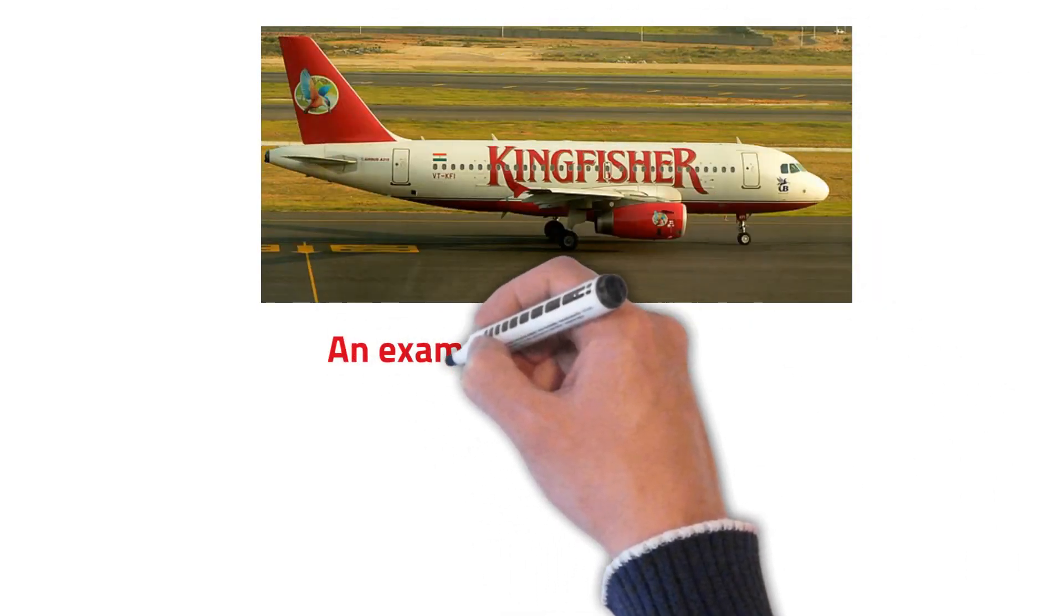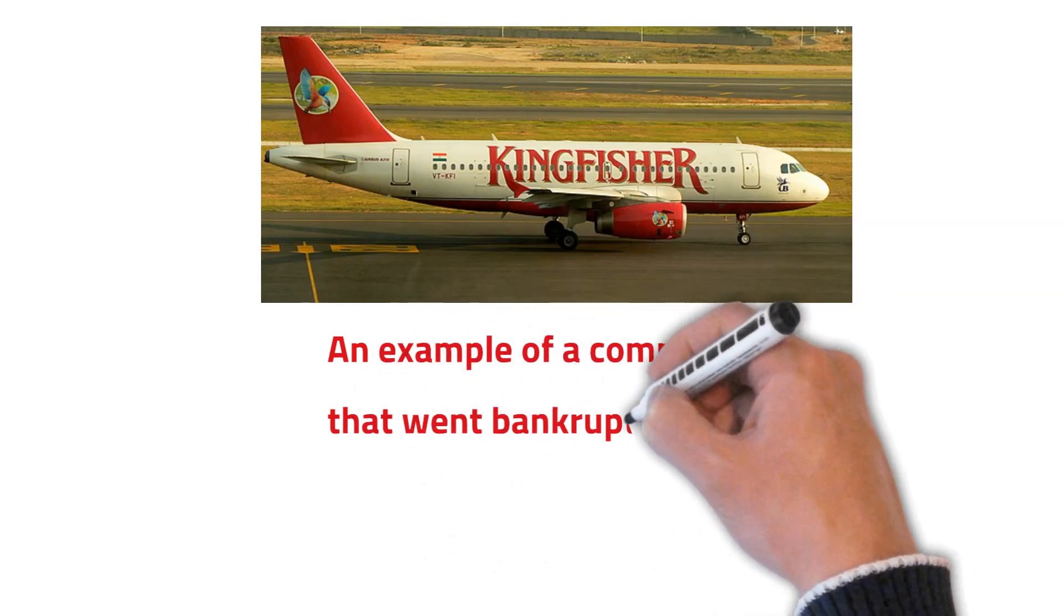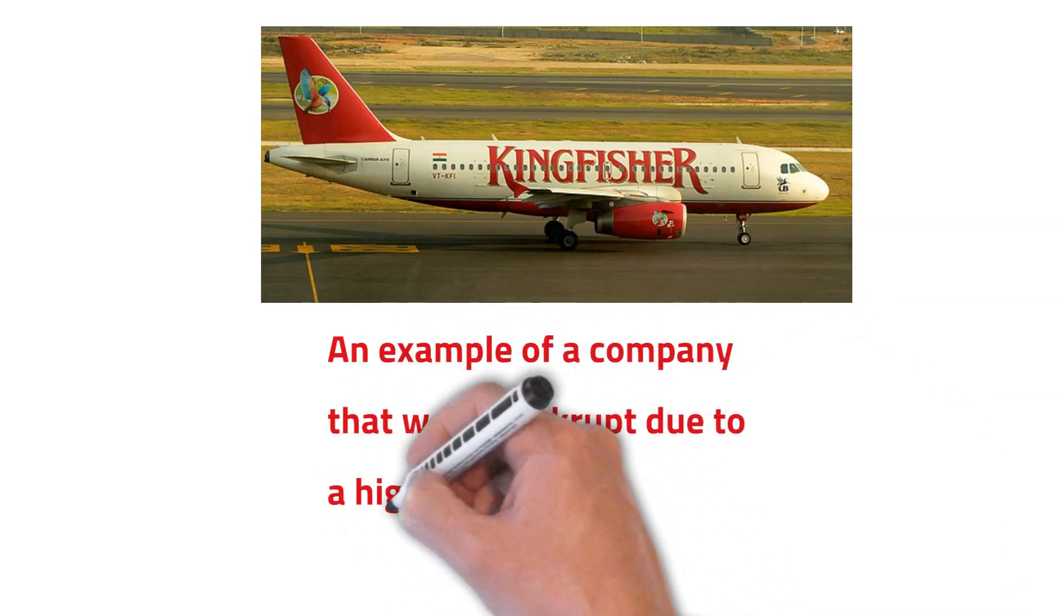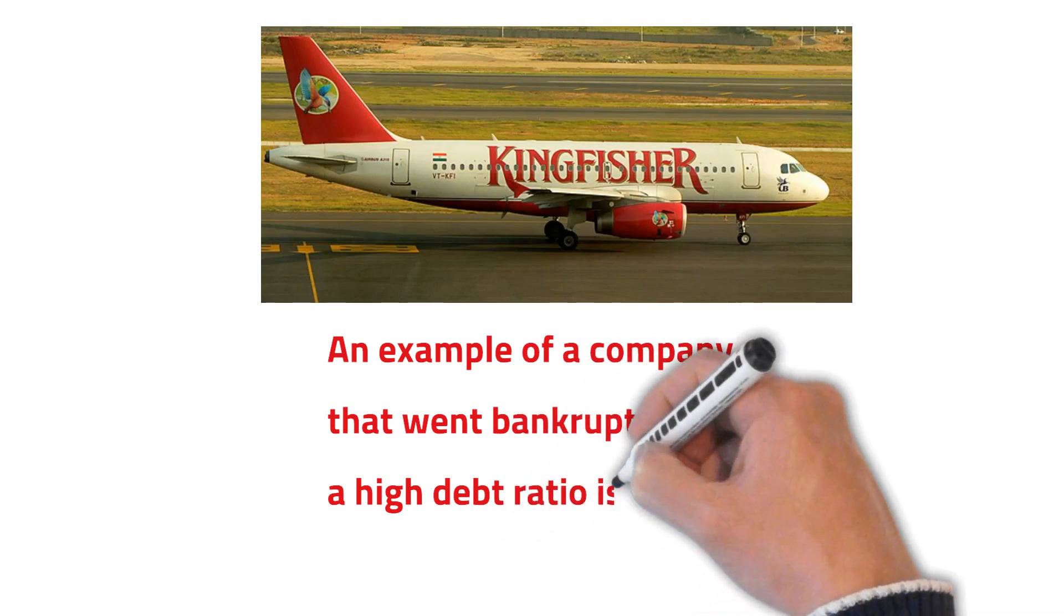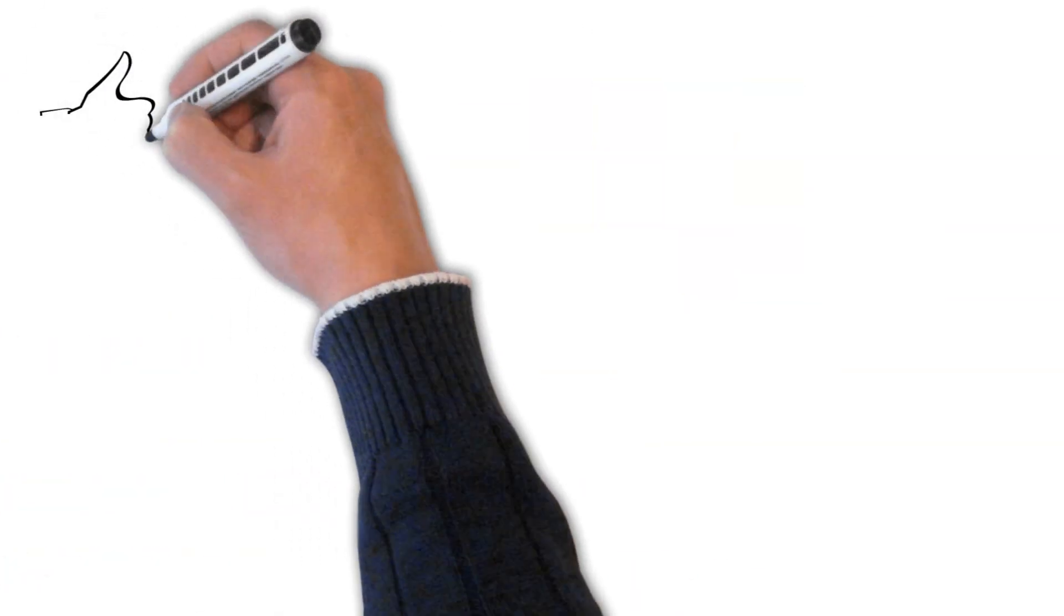An example of a company that has gone bust due to a high debt ratio is Kingfisher Airlines.